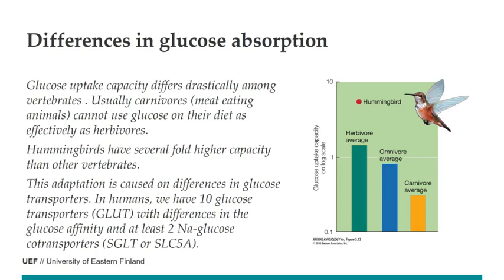The hummingbird's glucose uptake capacity is several-fold higher than any other vertebrate. How it achieves this is not fully clear, but in humans we have 10 different glucose transporters (uniporters) with different glucose affinities, plus at least two sodium-glucose co-transporters — possibly five, though three remain less well characterized. Having different proteins with different ligand affinities means some are better or less good at the job depending on conditions.